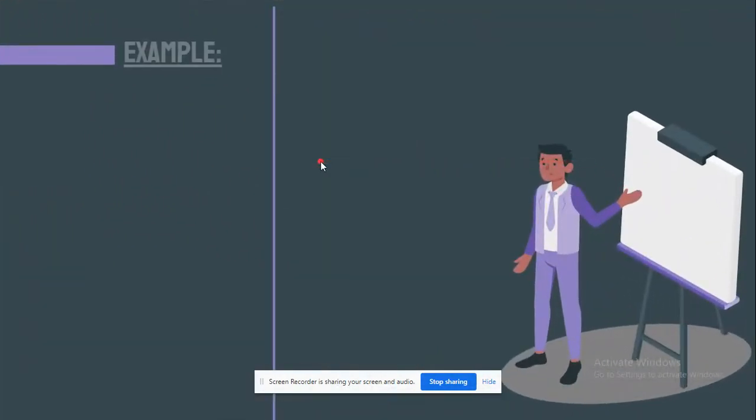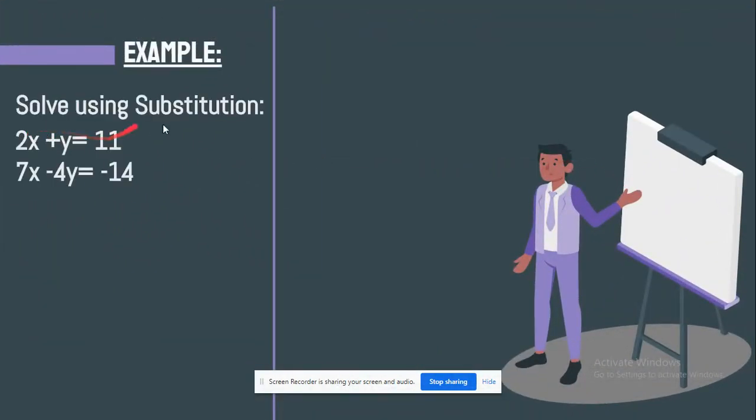So let's discuss an example. Solve using substitution. We have 2x plus y equals 11 and 7x minus 4y equals negative 14. So the first step, what you're going to do is you're going to choose the more simpler and easier equation. So in your opinion which equation is easier? You just have to choose one and then write it down. To me I'm going to choose the first one which is 2x plus y equals 11. It's more simpler and easier to me.